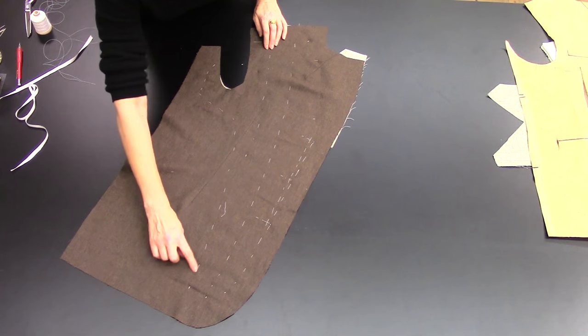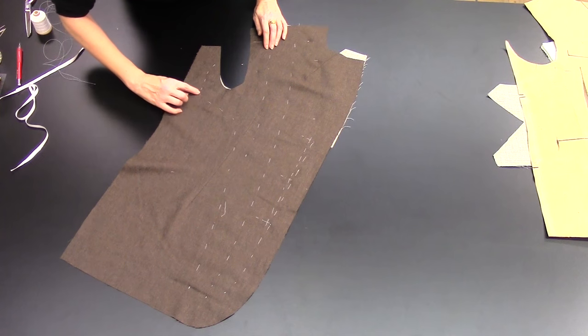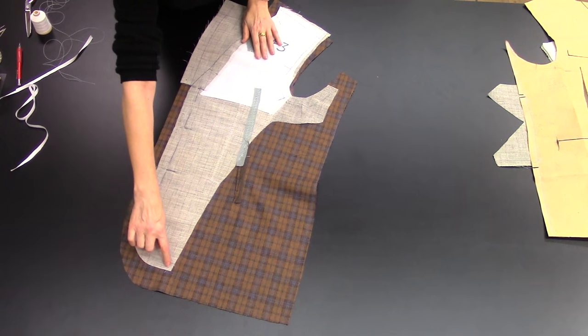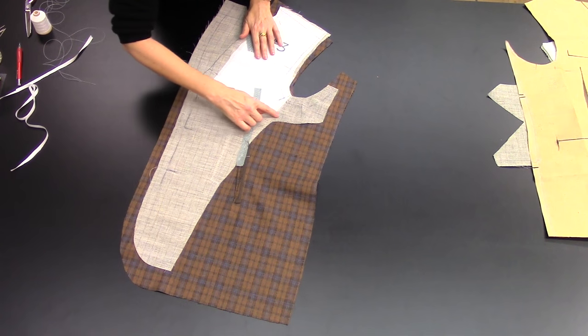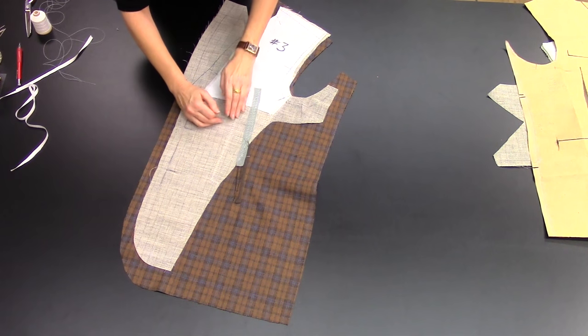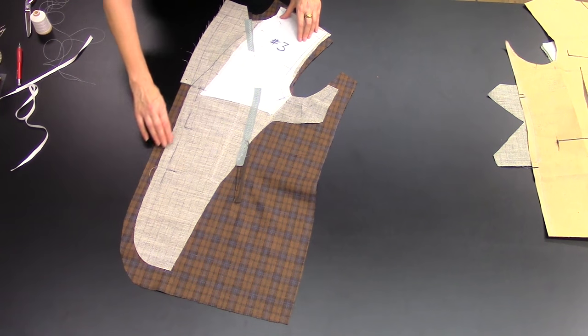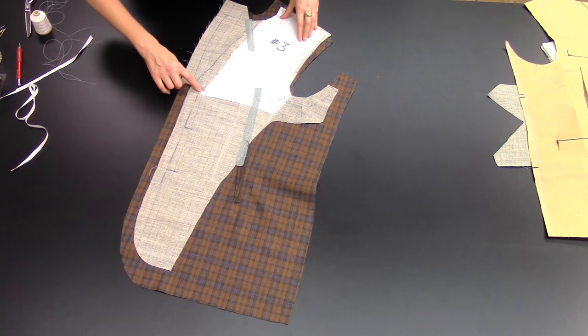Baste up the center, baste up the edge of the hymo or canvas. I'll turn it over so you can see here. Baste up here next to the arms eye, and then baste up the front to here.